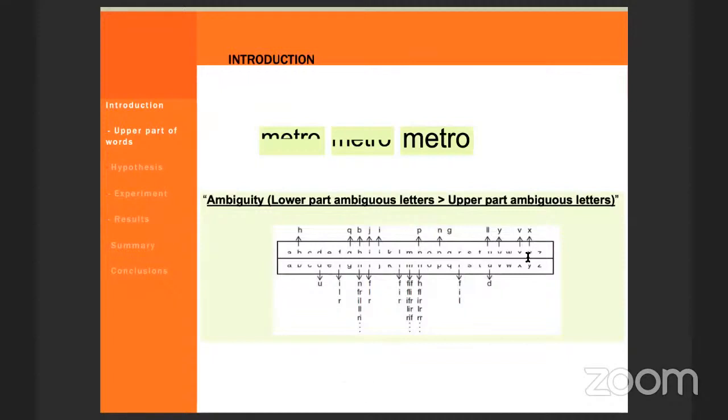The reason behind may be that in the Roman alphabet, the information at the level of letter features seems more distinctive in the upper part of letters than in the lower part. You can see, for example, here that the ambiguity is larger for the lower part of the letters compared to the upper parts.